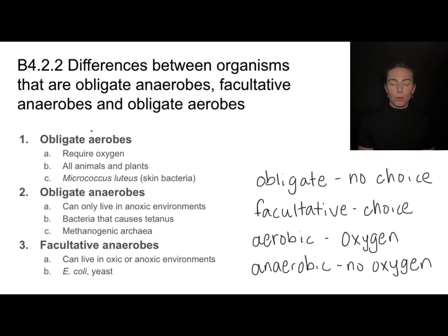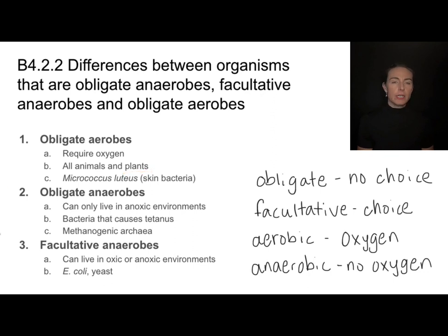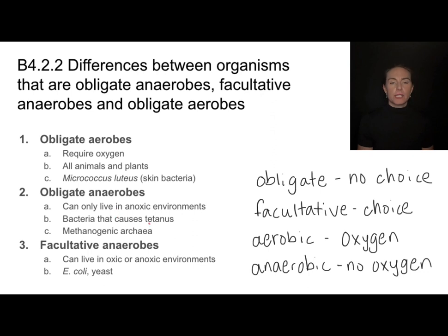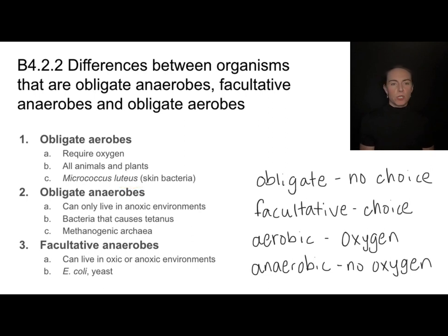Obligate aerobes are organisms that must have oxygen — this includes all animals and all plants. Obligate anaerobes are things that cannot be exposed to oxygen; they can only live in anoxic environments. This includes bacteria like the one that causes tetanus, or methanogenic archaebacteria. Those must be in anaerobic environments, unlike the bacteria that live on our skin, which are constantly exposed to oxygen.